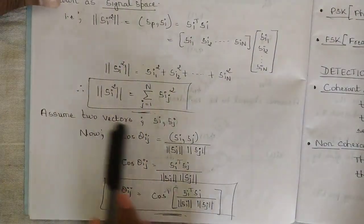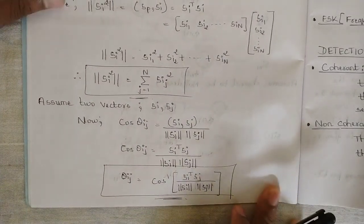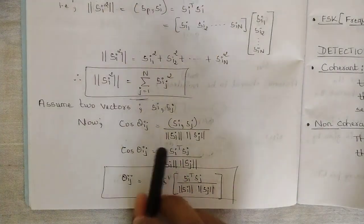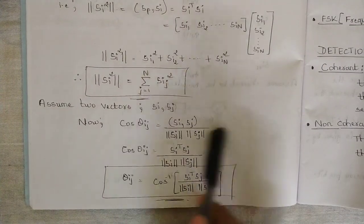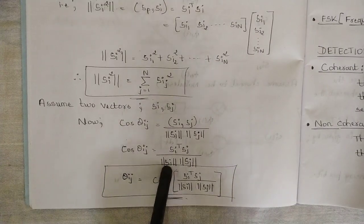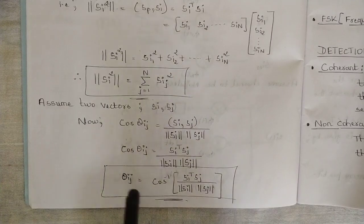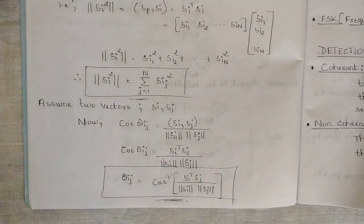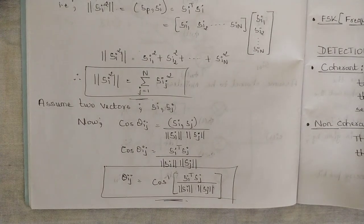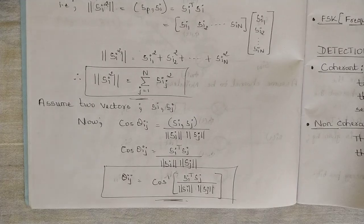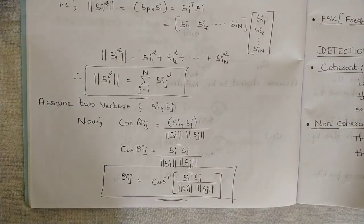Considering two vectors s_I and s_j, the angle between them in their geometric representation is given by cos(phi_Ij), taken as cosine because the angle lies in the positive quadrant. This involves two orthonormal basis functions phi_I of t and phi_j of t with respect to signal spaces s_I and s_j. These are the key parameters under geometrical representation of signals.